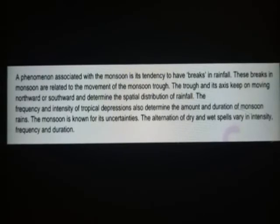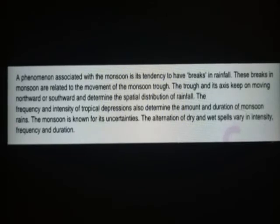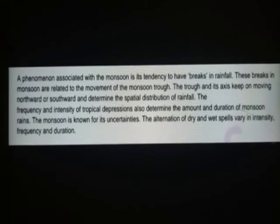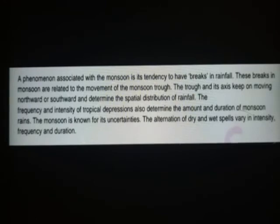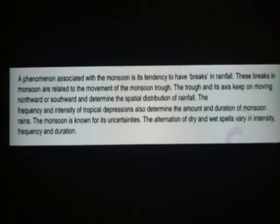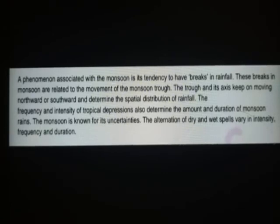The trough and its axis, on moving northward and southward, determine the spatial distribution of rain. Southward और northward movement में rain का distribution अलग-अलग होता है। The frequency and intensity of tropical depressions determine the amount and duration of monsoon rain. The monsoon is known for its instability and alternation of dry and wet spells, varying in intensity, frequency, and duration. यानि मानसून धीरे-धीरे पूरे भारत में बारिश करने के बाद retreating की condition में आ जाता है।